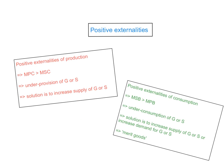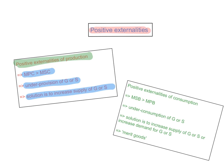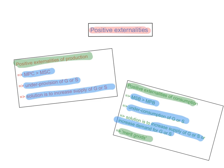To wrap up the topic of positive externalities: positive externalities of production occur when production results in the marginal private cost curve being higher than the marginal social cost. In this case, there's an underproduction or underprovision of the good or service, and the solution is to increase the supply of the good or service. In the case of positive externalities of consumption — which we refer to as merit goods — the marginal social benefit is higher than the marginal private benefit, the problem is underconsumption, and the solution is either to increase supply through subsidizing or to increase demand through positive advertising.